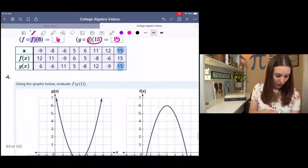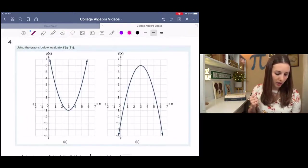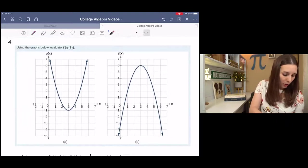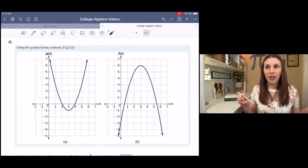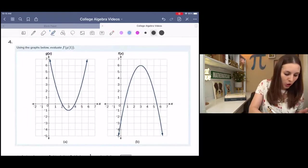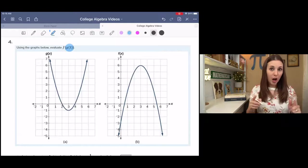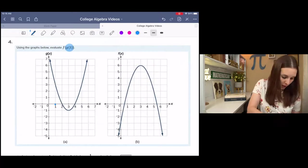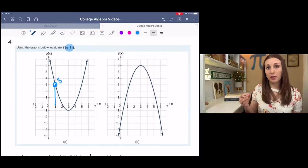Then we can do a graph, which is essentially a table of values in picture form. And this one wants to use the graphs below to evaluate f of g of 1. Now take note of the graphs. In the first graph, we have g of x. And in the second graph, we have f of x. So we have two different functions being graphed. We're wanting to find f of g of 1. So we're starting with g of 1, which means that we need to look at the graph of g. g of 1, where 1 is x. Let's use blue. 1 is x. g of 1 is 3. So that point is 1, 3. So g of 1 is 3.